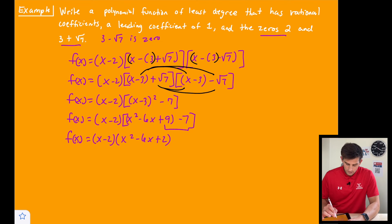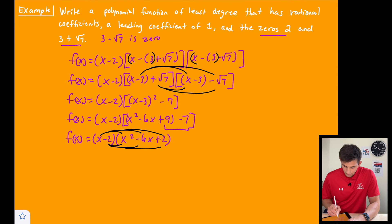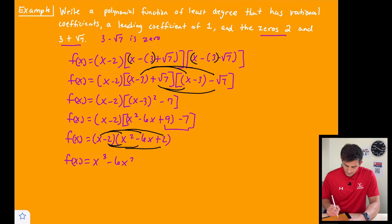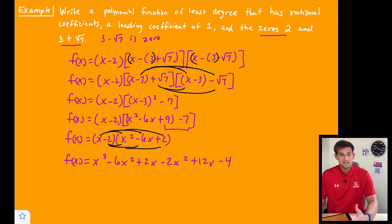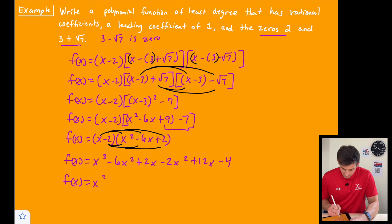Now we multiply this binomial by the trinomial — multiplying x by all three terms and negative 2 by all three terms. x times x squared gives x cubed; x times negative 6x gives negative 6x squared; x times 2 gives 2x; negative 2 times x squared gives negative 2x squared; negative 2 times negative 6x gives plus 12x; negative 2 times 2 gives minus 4. Combining like terms: negative 6x squared minus 2x squared is minus 8x squared, and 2x plus 12x is plus 14x.